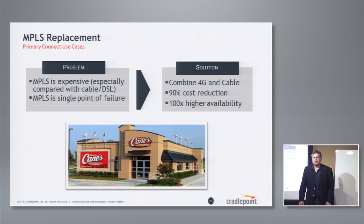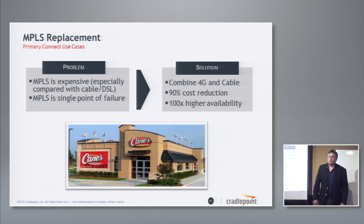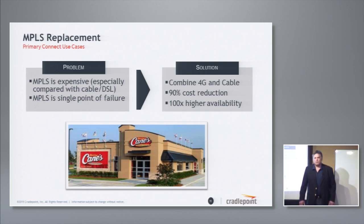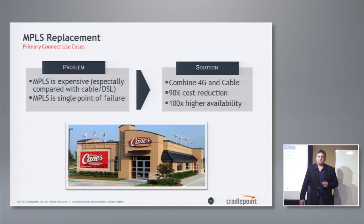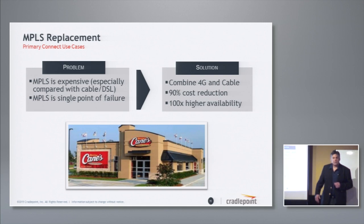MPLS replacement: if you're an existing enterprise using MPLS, you're probably going to keep using it — it's just too risky to touch. But if you're a greenfield opportunity, like the fastest-growing quick-serve restaurant in the nation, Raising Cane's — why go to MPLS if you don't have to? Their strategy was to use cable and 4G so they get availability and reliability from two separate networks not buried in the same trench. We have not yet found a squirrel that can bite through wireless. Standard broadband is just so cost-effective compared to MPLS.